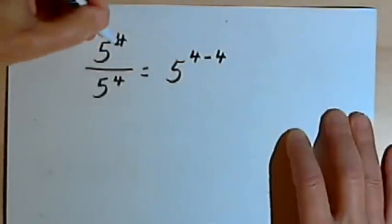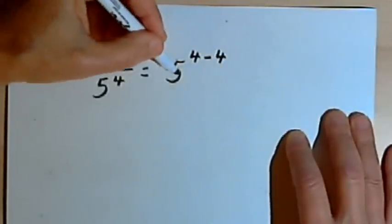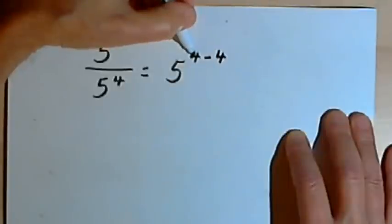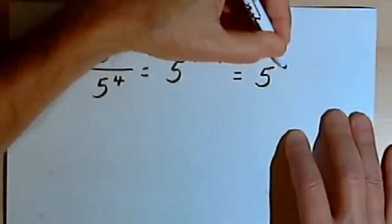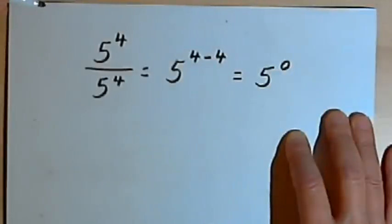So the exponents in both cases are 4. So I'm going to have 5, and the power is going to be 4 minus 4. Well, 4 minus 4 is 0. So this is 5 to the zero power.